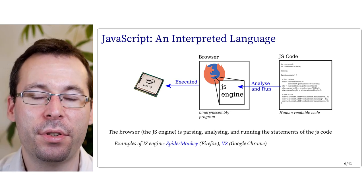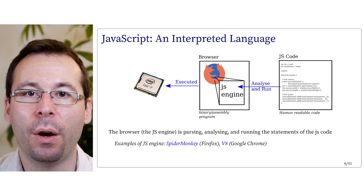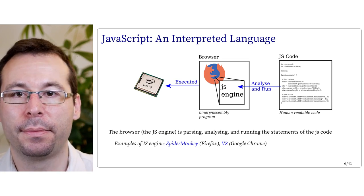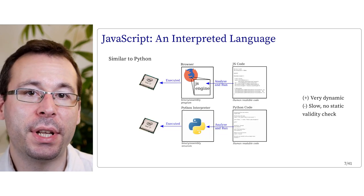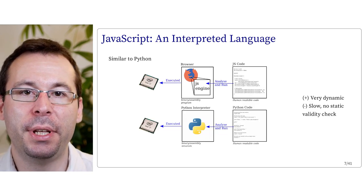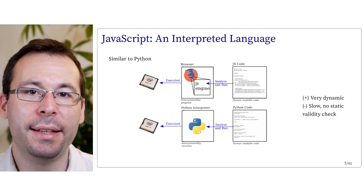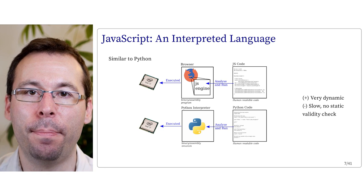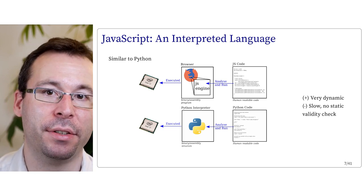In Firefox, the JavaScript engine is called SpiderMonkey, while in Google Chrome it's V8. Note that this process of using an interpreted language — meaning a software reads and executes code — is similar to what Python does, where the Python interpreter reads the Python code.